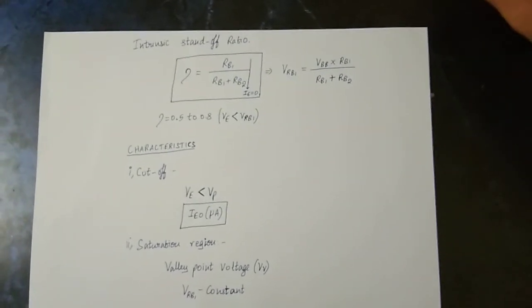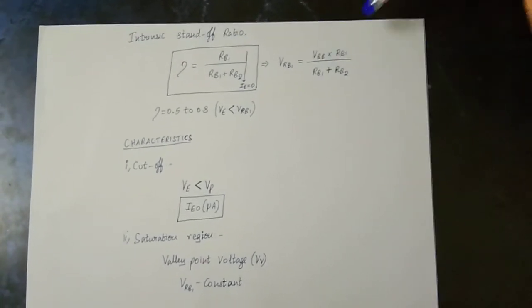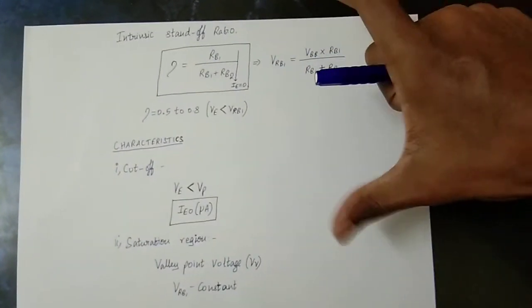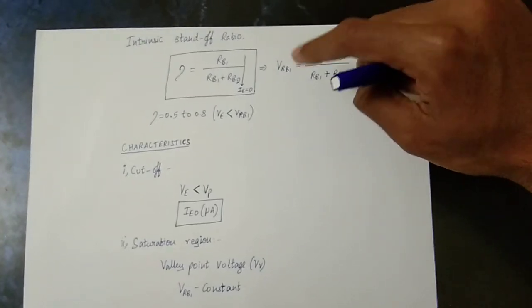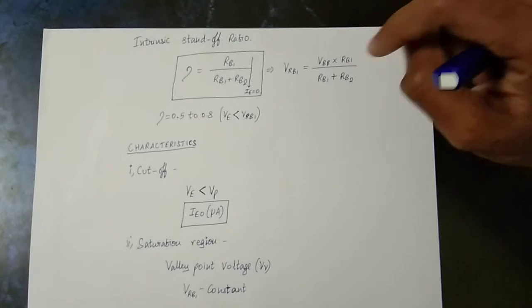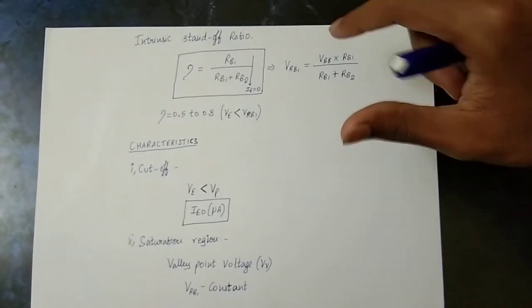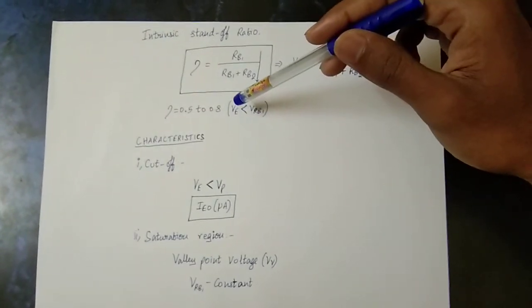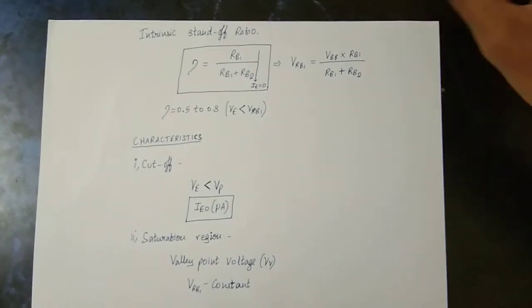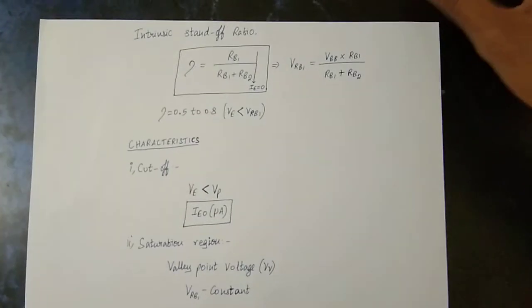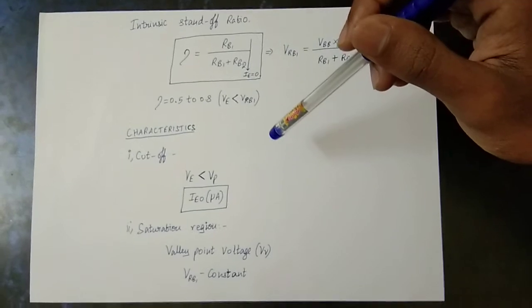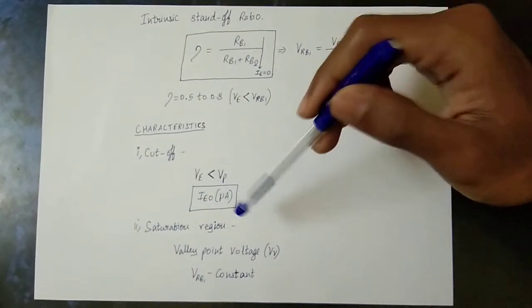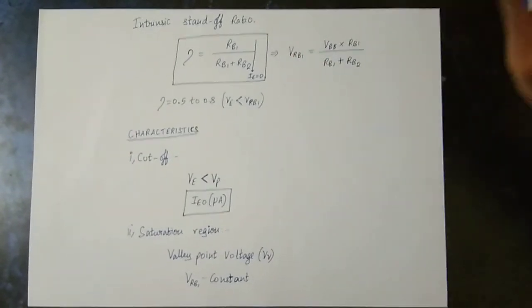The intrinsic standoff ratio eta is equal to Rb1 divided by Rb1 plus Rb2. The Rb1 is variable — the resistance is variable and voltage is variable. The current flow is variable. Using the voltage division rule, Vrb1 equals total voltage multiplied by Rb1 divided by Rb1 plus Rb2. The standard ratio range is 0.5 to 0.8. When Vrb1 is greater than VE, the current is the reverse saturation current.